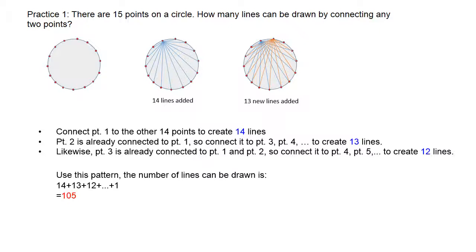Do you see the pattern? We go from 14, 13, 12, and all the way down. When you get to the last point — point number 15 — there's nothing new to create because it's already connected to all the others. So the pattern goes 14 plus 13 plus 12, all the way down to one. And this sum is 105.